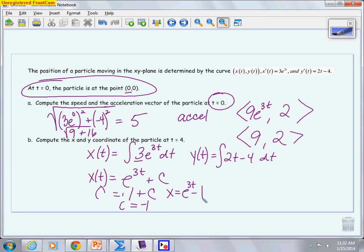And then I'm going to go over to the y, and when I integrate that, I'm going to get t² - 4t + c. Again, using the initial condition of time is 0, the y is also 0. So I get 0 = 0 - 0 + c, so c is just 0.